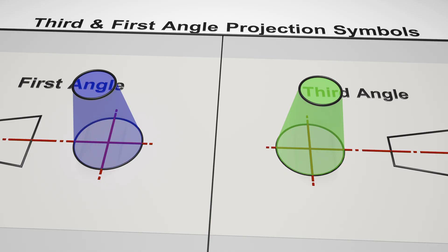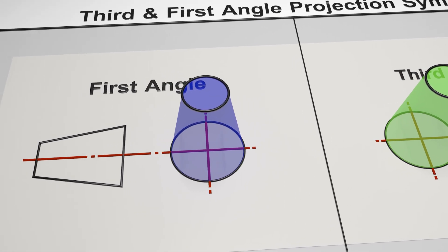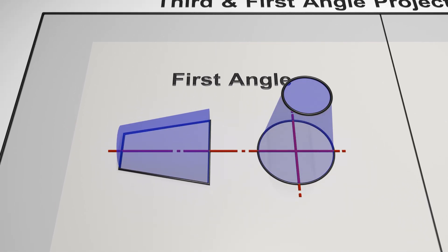And for first angle, we learned from our previous videos that the easy way to remember it is to think of it as the physical object on the paper tipping in the direction of the view we're looking to create.